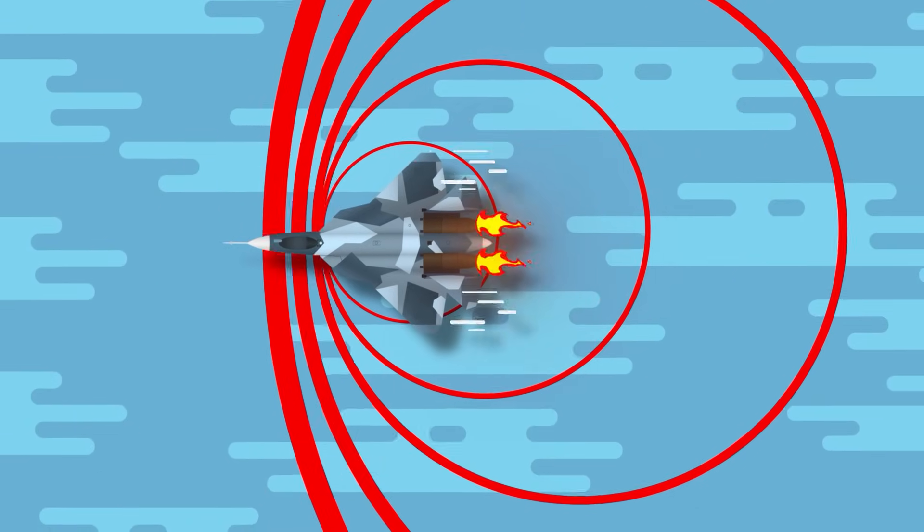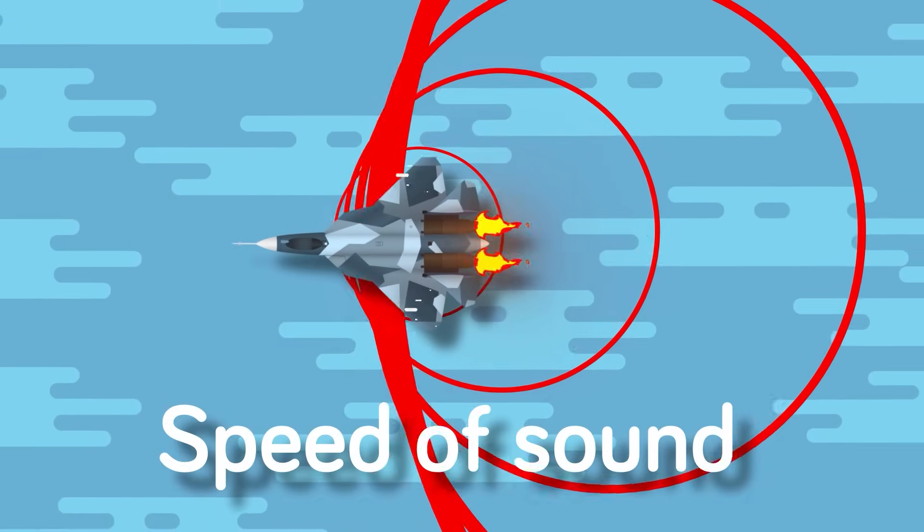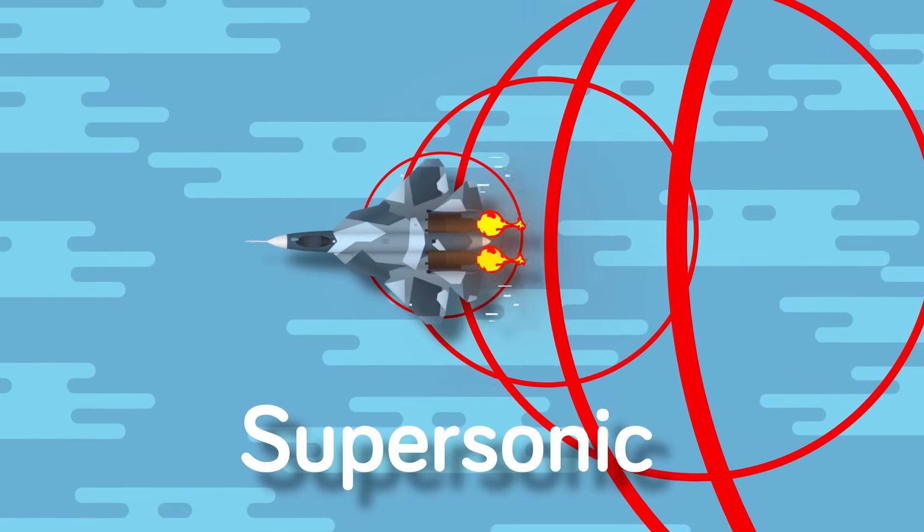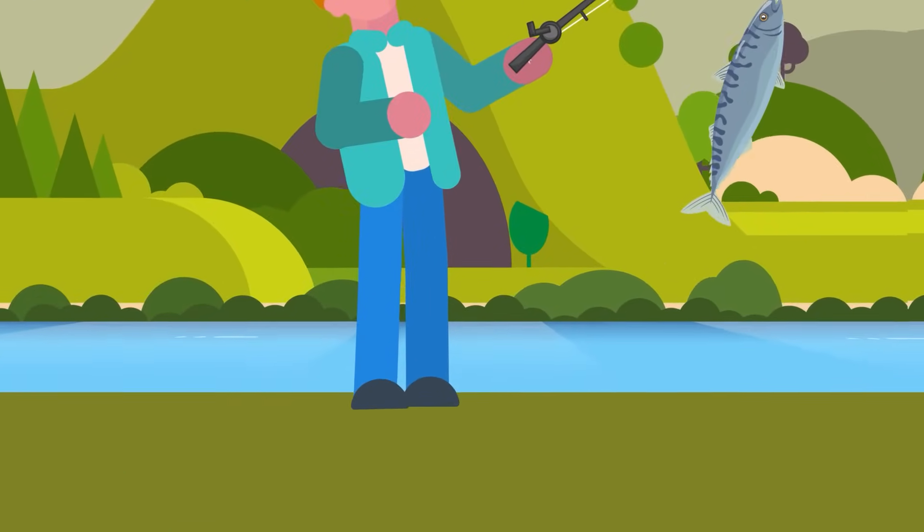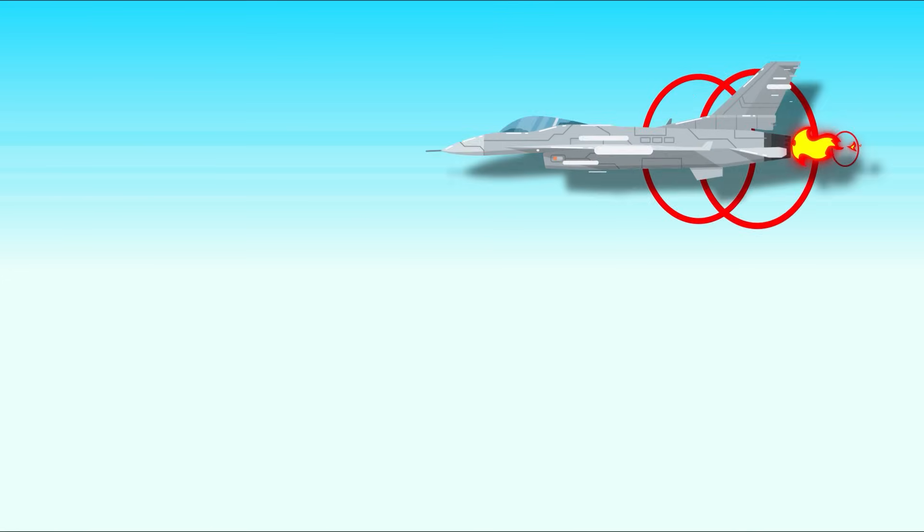As an aircraft travels through the air, the sound waves it generates radiate out in a similar way to ripples in water from a moving boat. However, when an aircraft goes supersonic or exceeds the speed of sound, it means the plane is moving faster than the sound waves it is creating.